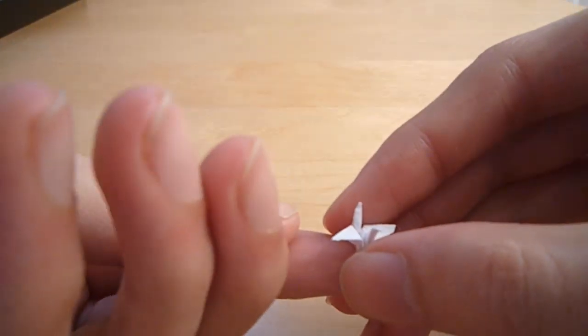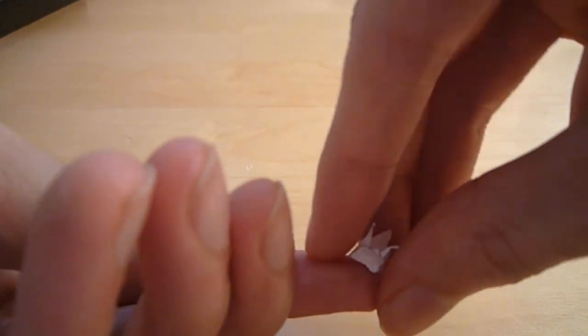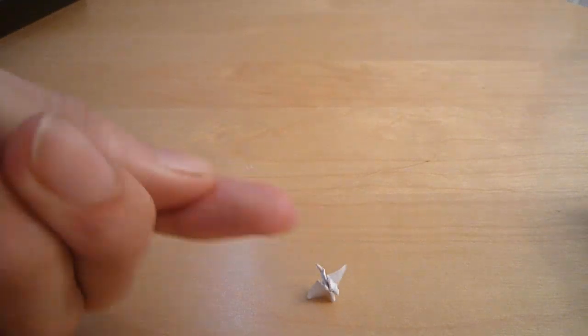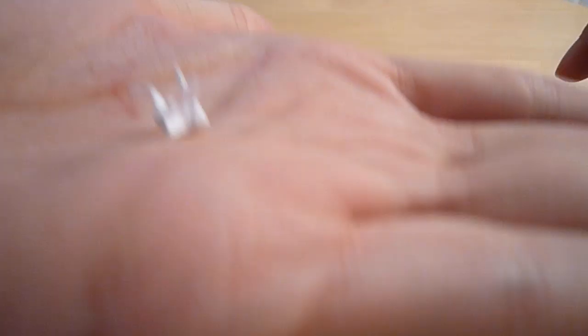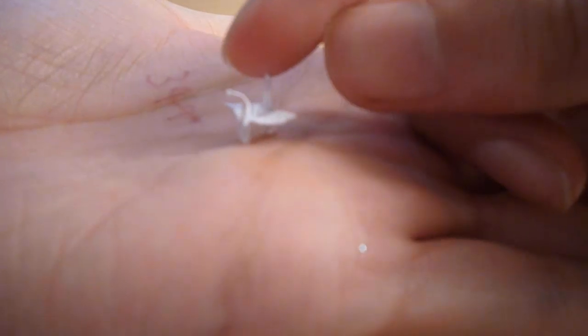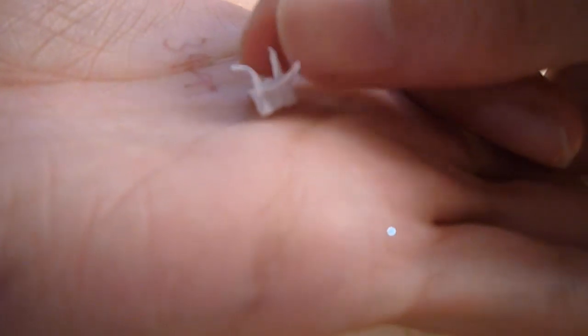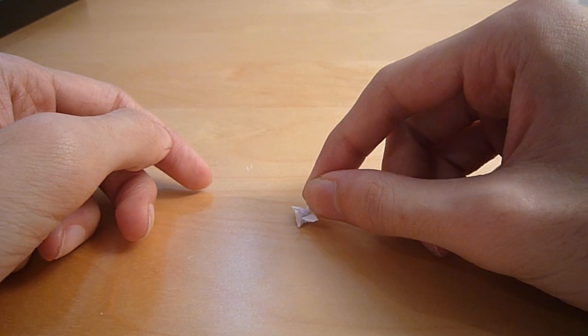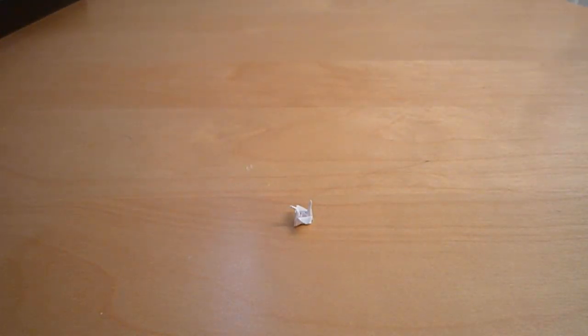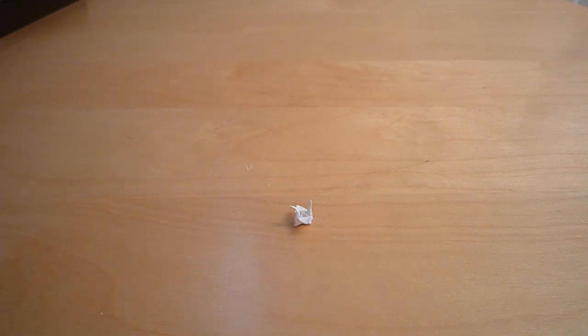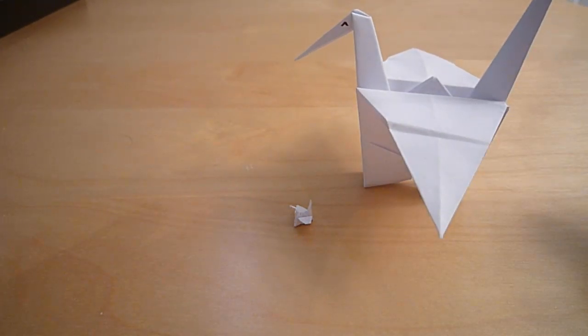And there you have it. There you have the, sorry. There you have, as you can see, the tiny crane. And that is how you make the tiny crane. And it's much more convenient, you can see, than the large crane. With the full sheet of A4 paper. This can be done with tiny scraps.